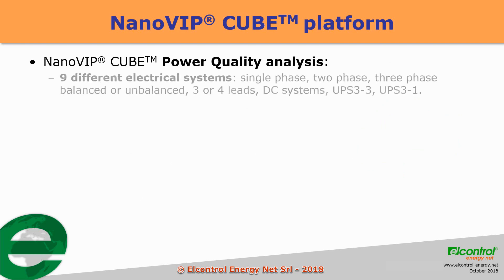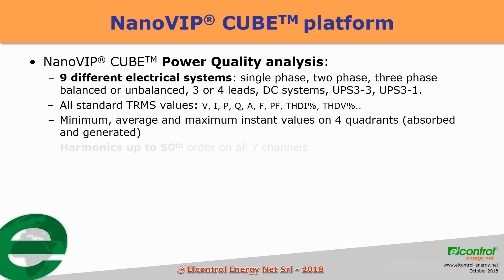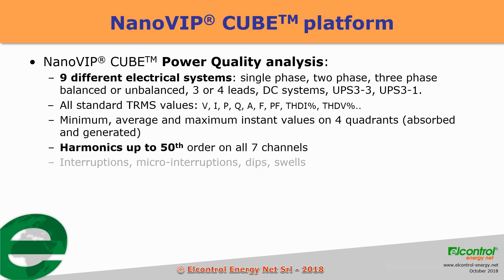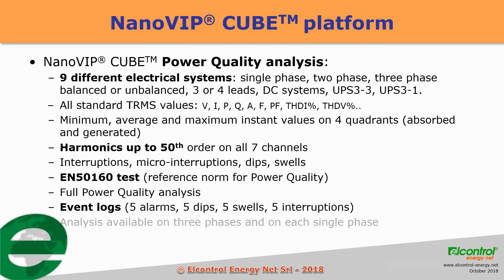NanoVip Cube Wi-Fi has a wide range of measures across nine different electrical systems: single phase, two phases, three phases, balanced and unbalanced, with three or four leads, DC systems, UPS 3-3, and UPS 3-1. All standard TRMS values are supported — minimum, average, maximum, instant, absorbed, and generated.